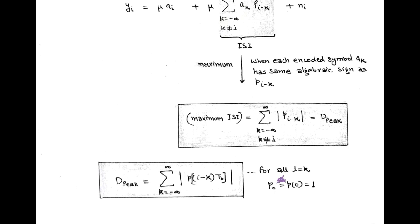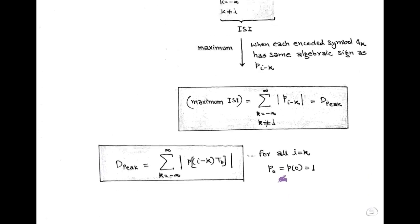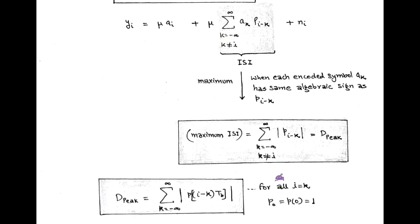So, in baseband transmission of digital data, there is an introduction of inter-symbol interference, and this ISI can be observed and analyzed using the eye pattern. With the help of the eye pattern, we can find the peak distortion, and with the help of peak distortion, we can minimize the inter-symbol interference using a raised cosine roll-off spectrum.